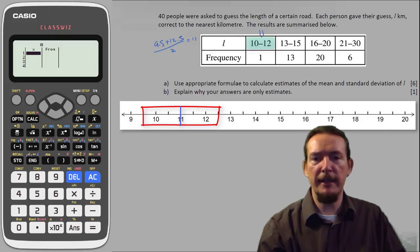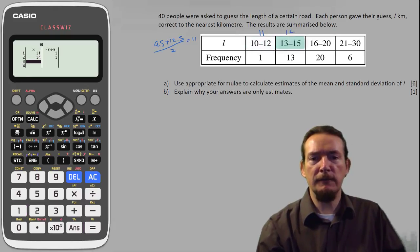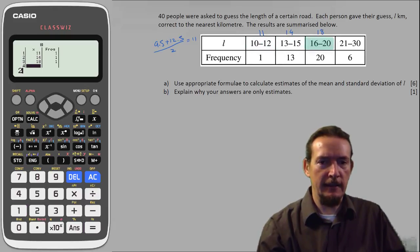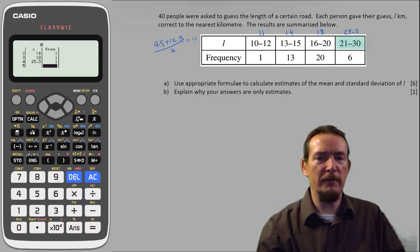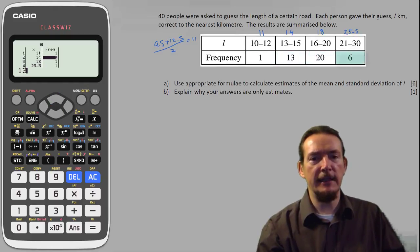Okay, applying the same thinking to all our other groups we get estimated values of L for 11, 14, 18, and 25.5 which we can now type into the calculator along with the frequencies 1, 13, 20, and 6.